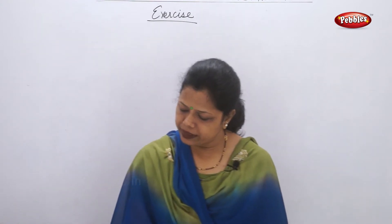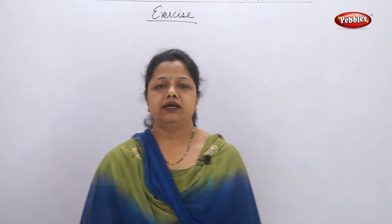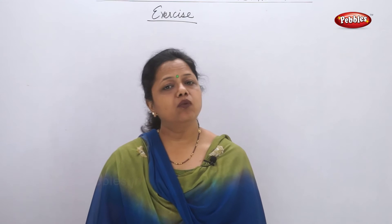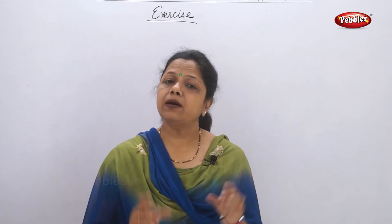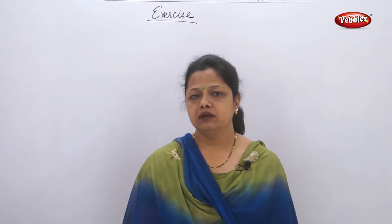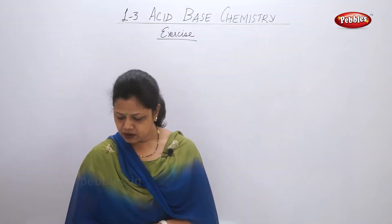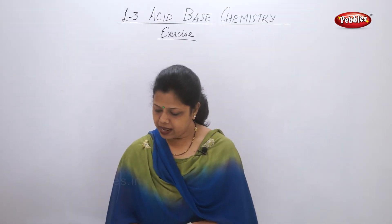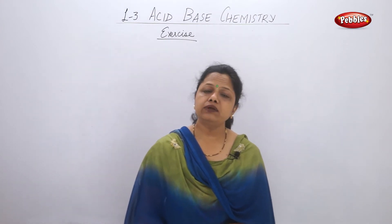Question number four: answer the following. How do metal carbonates react with acids? Metal carbonates — it can be sodium carbonate or sodium bicarbonate — both react with acids to form some salt along with carbon dioxide and water. You can give any example in support of your answer.